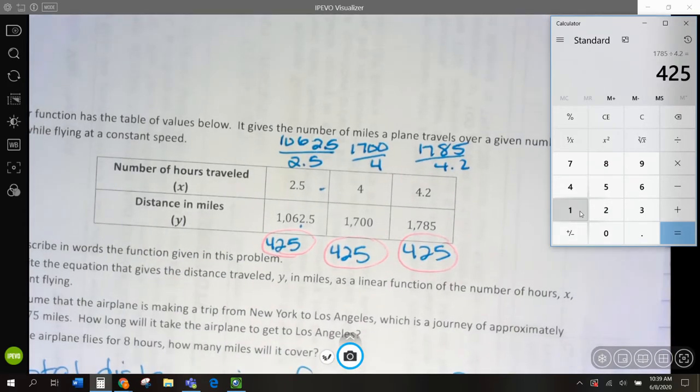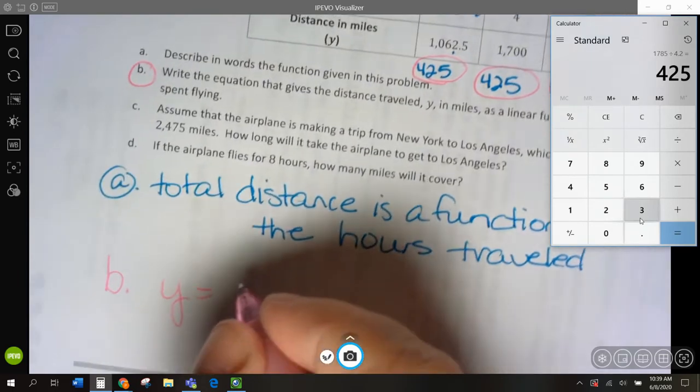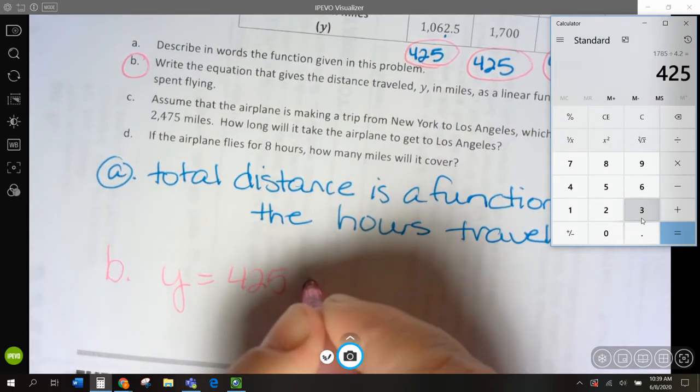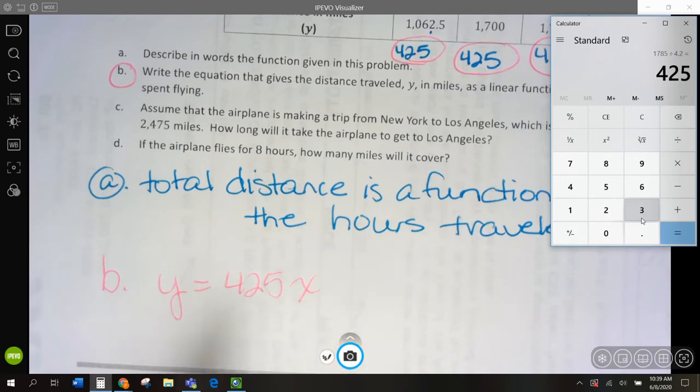So, to write an equation B, we would say y equals 425x, right? Total miles is 425 times every hour flown.